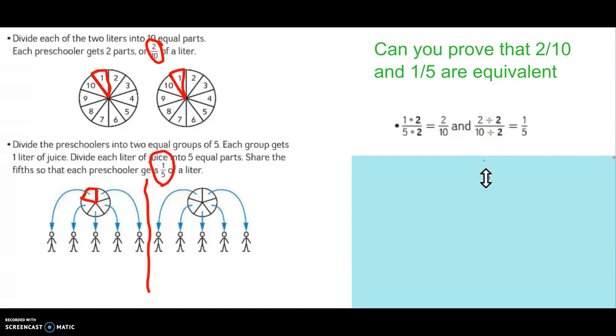Another way to prove it? With the fraction circles, I can see that with two-tenths and one-fifth, the same amount of the whole is covered or shaded in.